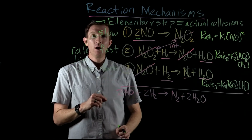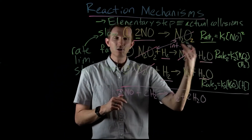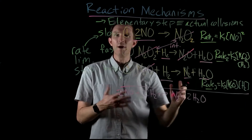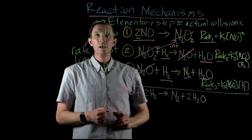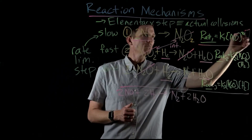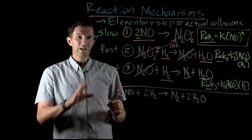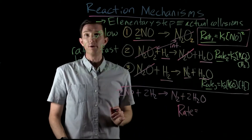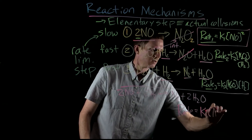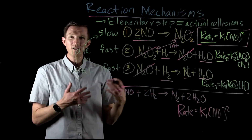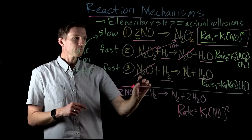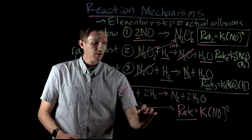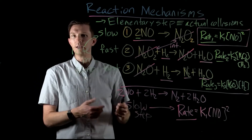Because the first step is our rate-limiting step, its rate is much slower than the rates of steps two and three. So if we are looking at our overall rate, steps two and three don't matter because they are much faster than our first rate. By looking at our mechanism, the rate law expression for the slow step gives us our overall rate law expression. So the overall rate equals K1 times [NO]^2 — a direct consequence of the fact that steps two and three are very fast and won't significantly affect the overall rate.